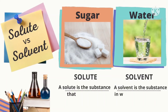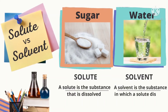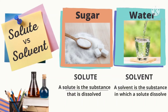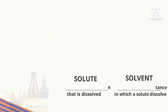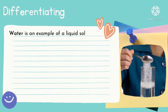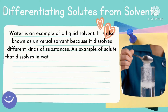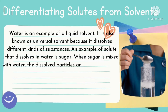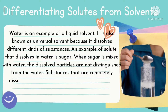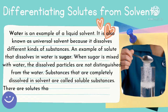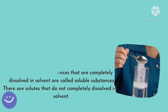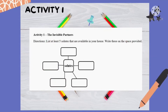But what is a solute? It is the substance that is dissolved. How about solvent? A solvent is the substance in which a solute dissolves. Sugar and water is the best example. Water is an example of a liquid solvent. It is also known as universal solvent because it dissolves different kinds of substances. An example of solute that dissolves in water is the sugar.